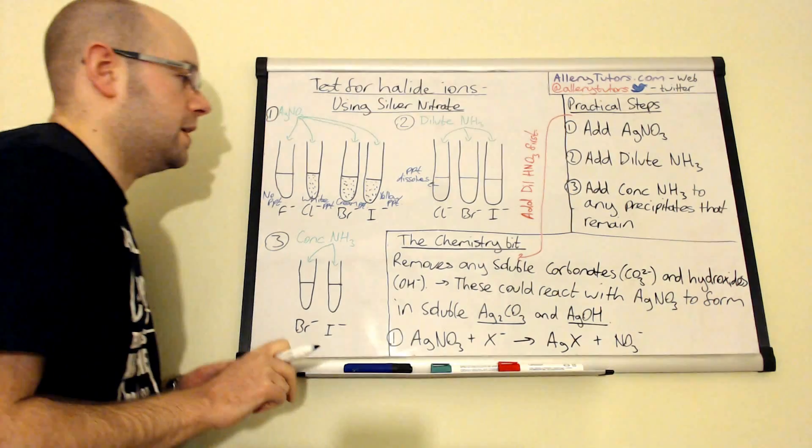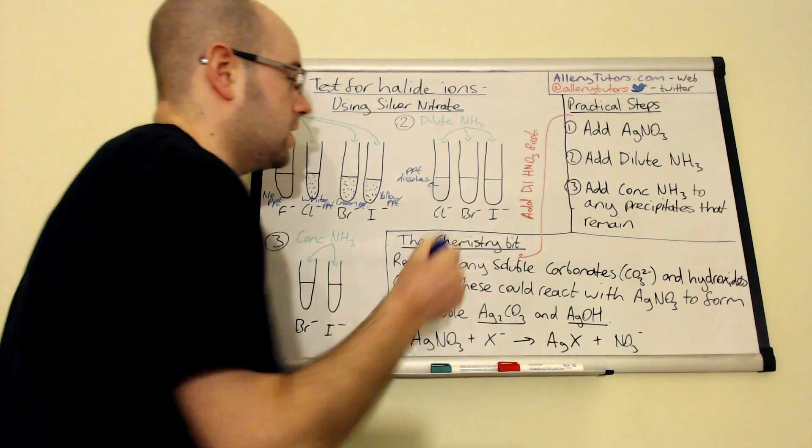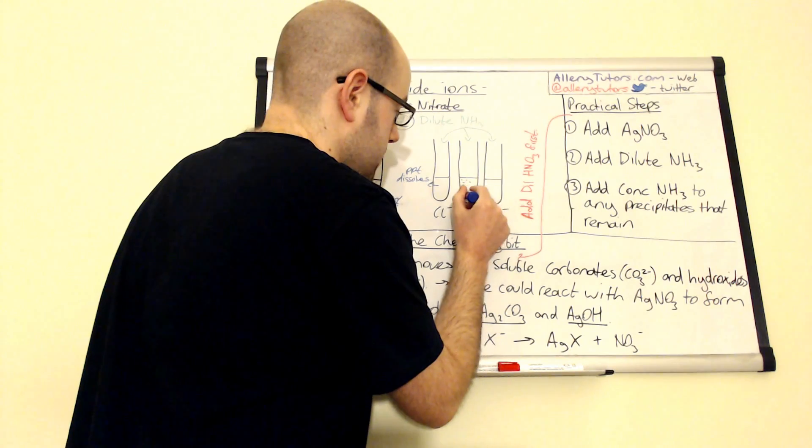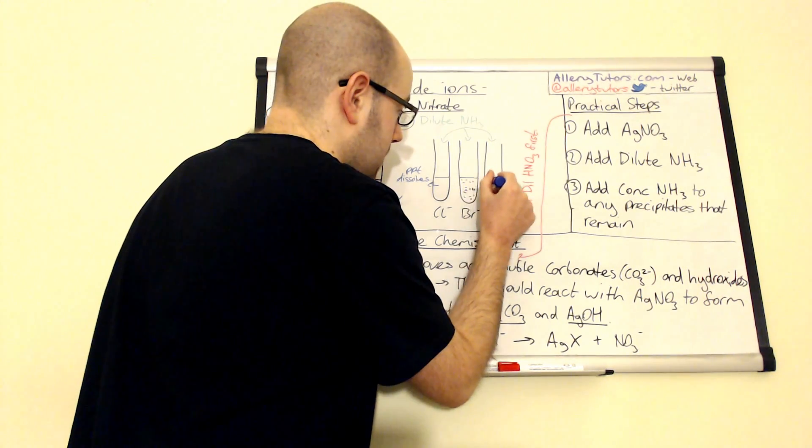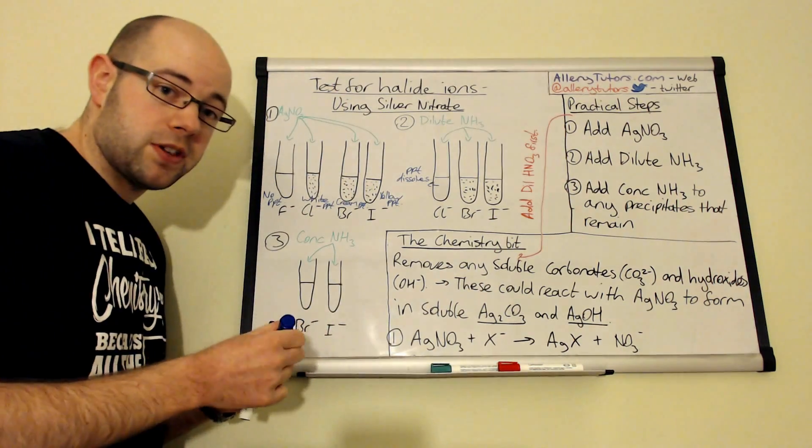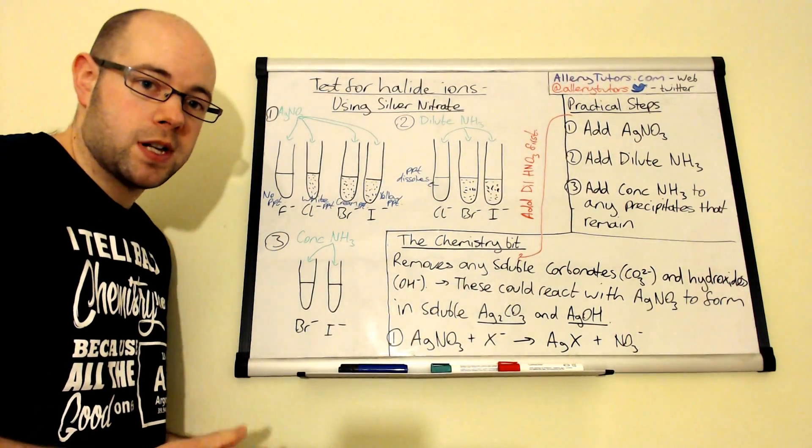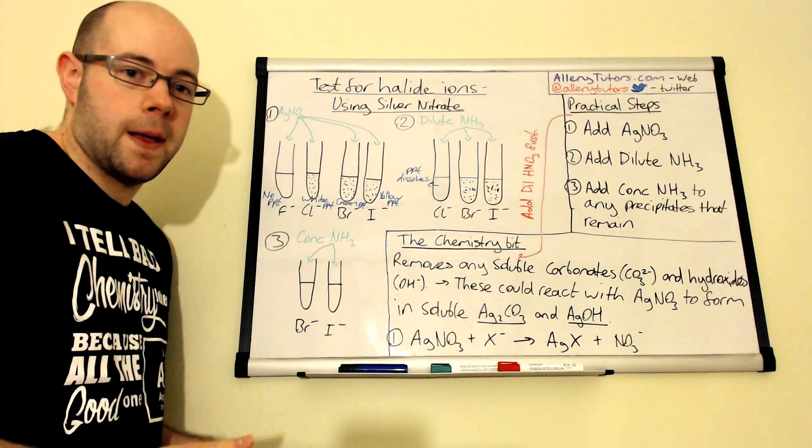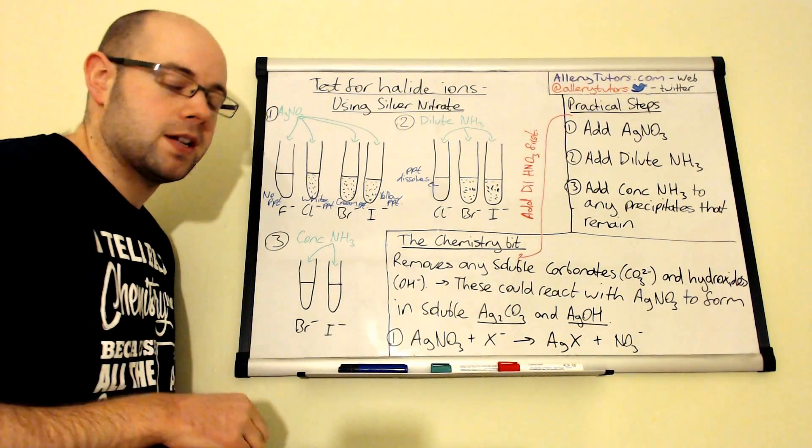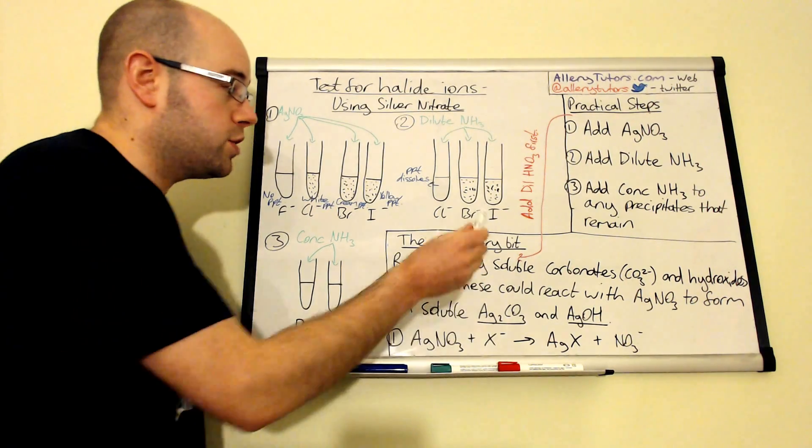It disappears completely. With the bromide and iodide, we actually still have a precipitate that's present. So the dilute ammonia, add it to these three, to all three of them, actually don't dissolve. If you have a precipitate that's formed and you add dilute ammonia and that precipitate disappears, then you know that your halogen has got to be chloride. With the other two, dilute ammonia doesn't dissolve them.